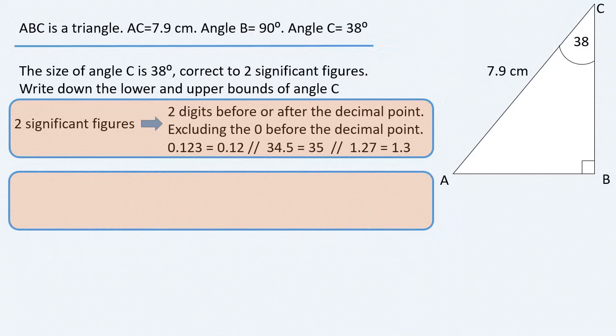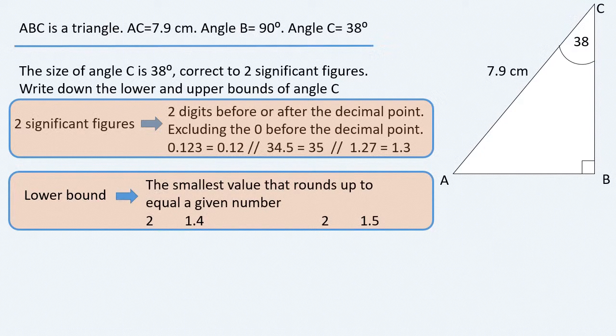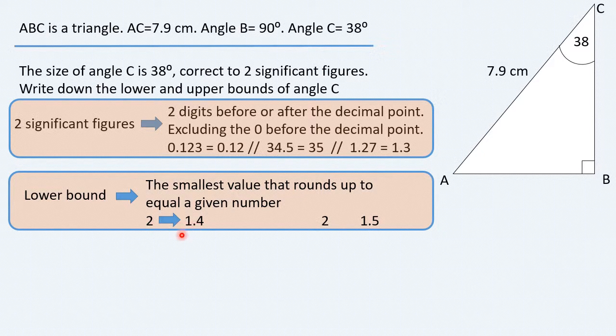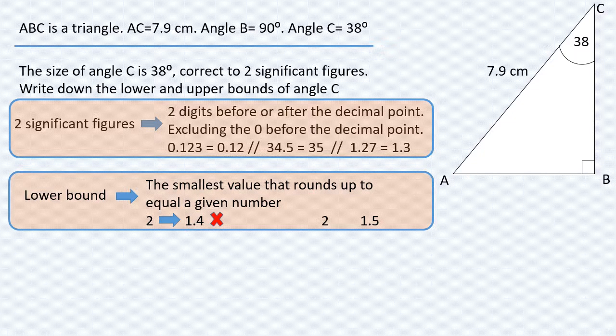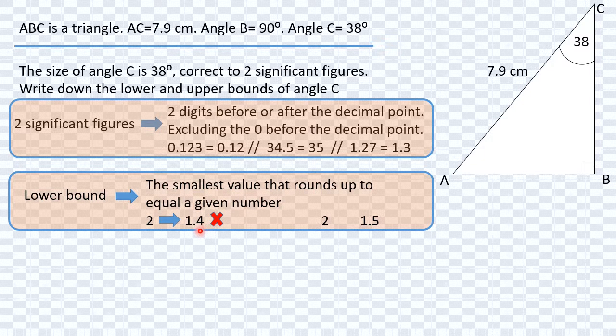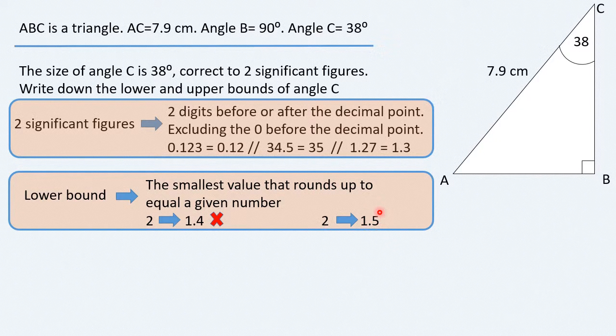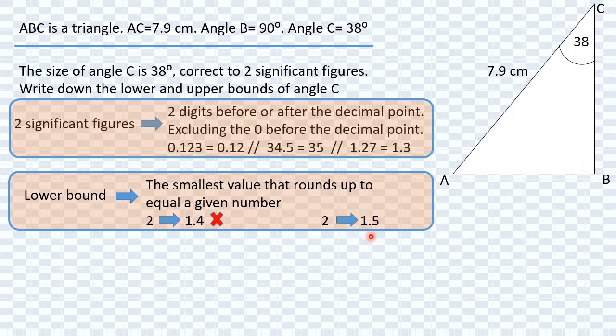Now, what is the lower bound? By the lower bound, we mean the smallest value that rounds up to equal a given number. So, for instance, if we have number 2, is 1.4 the lower bound for it? It's not, because we cannot round it up to become two, because 4 is not equal to or greater than 5. In contrast to this, 1.5 is actually the lower bound for two, because it's the least value that can be rounded up to 2.